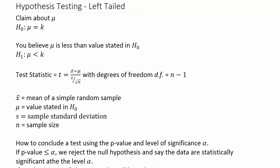In hypothesis testing we need to state our null and alternate hypothesis. The claim about mu, the population mean, that's our null hypothesis: mu equals some number k. For a left-tailed test we believe that mu is less than the value stated in the null hypothesis. So our alternate hypothesis H sub 1 would be mu is less than k.